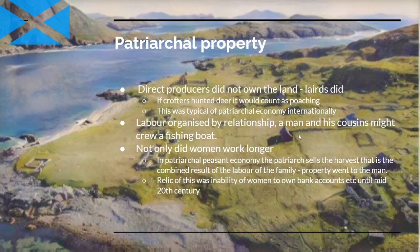What were the property relations in such a society? The direct producers didn't own the land — lairds did — and if the crofters hunted this would count as poaching, but this didn't stop it happening. This was typical of a patriarchal economy internationally. Labour was organised by relationship: for example, a man and his cousins might crew a fishing boat. And not only did the women work longer, but in a patriarchal peasant economy it's generally the case that the patriarch sells the harvest — that is to say, he sells what is the combined result of the labour of the whole family — and that becomes the property of the man. A relic of this was the inability of women to own their own bank accounts, for example, until the mid-20th century.